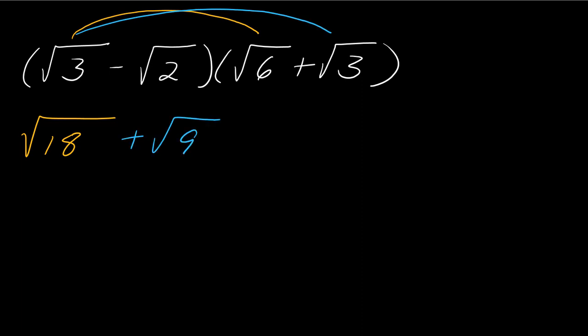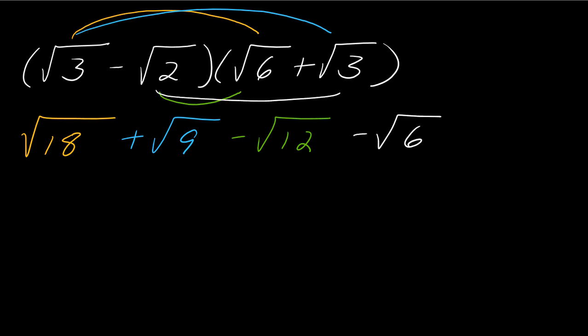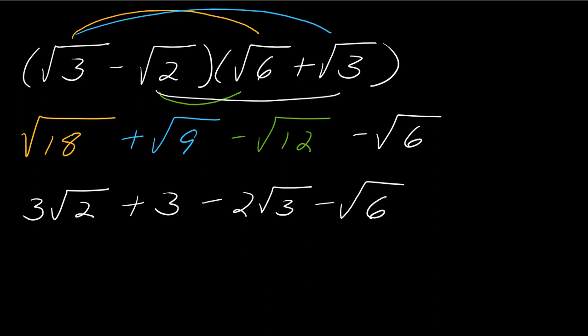Then I have negative square root of 2 times square root of 6, so that's minus the square root of 12. And then square root of 2 times square root of 3 becomes minus the square root of 6. So I multiply everything together and see what else I can do. The square root of 18 — the largest perfect square that goes into it is 9 — so this becomes 3 times the square root of 2, plus 3, minus 2 times the square root of 3, minus the square root of 6.